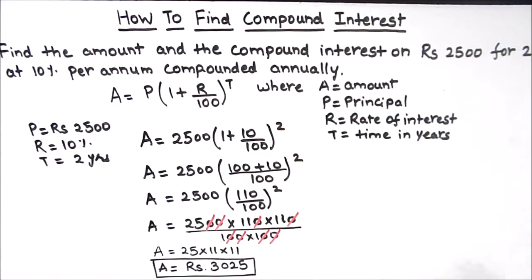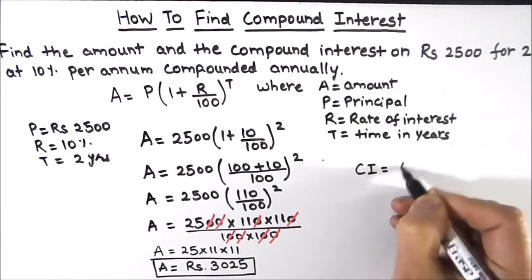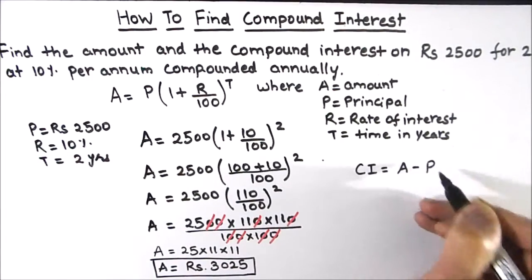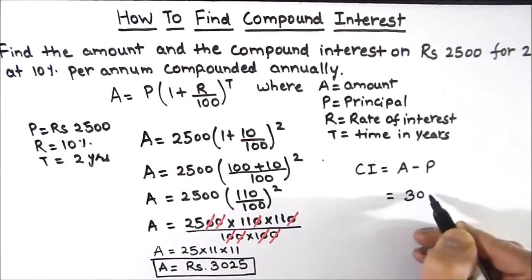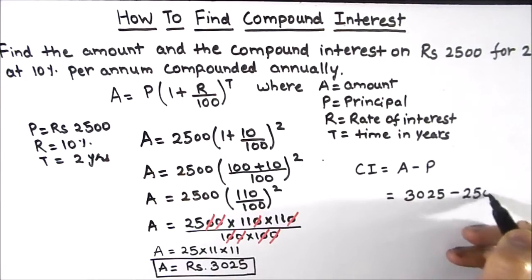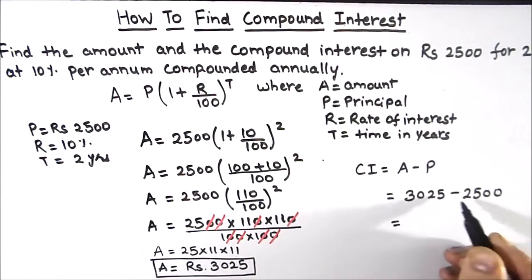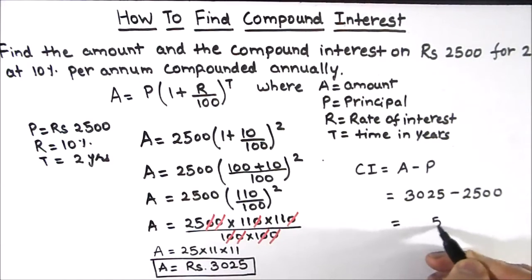This is the amount which we need to find. Now we need to find out the compound interest. Compound interest equals amount minus the principal amount. Amount is 3025 minus principal amount was 2500.